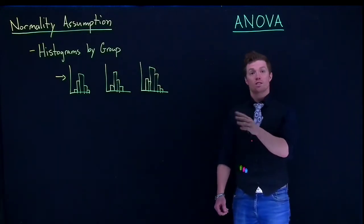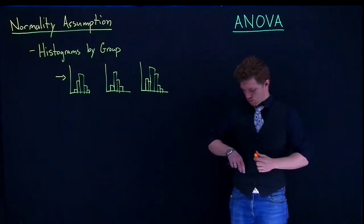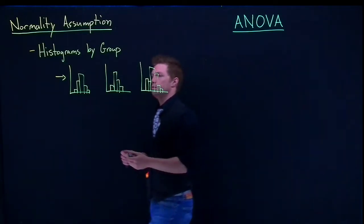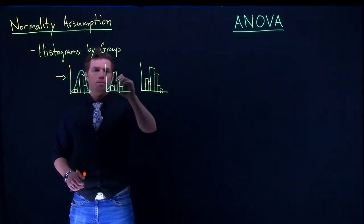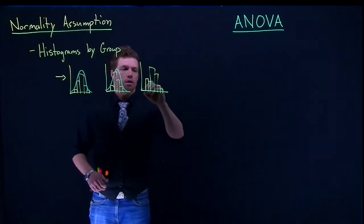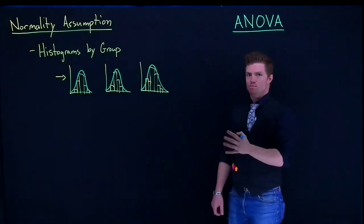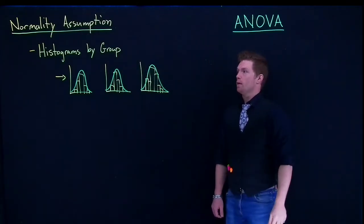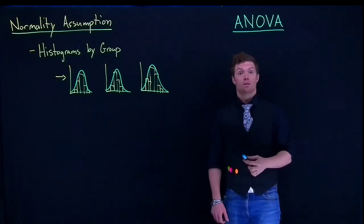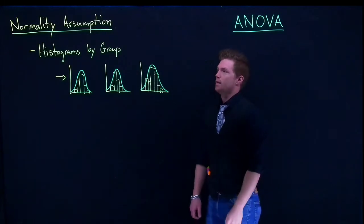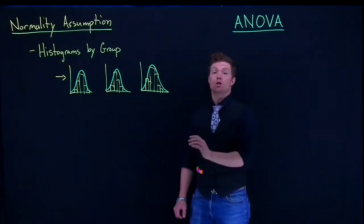Now each of those looks slightly different but on each of them they basically form a rough bell shape. And remember the requirement isn't that they perfectly follow this normal distribution. It's that they are roughly following a normal distribution. So that's one way that we can try to determine and assess if we have a normal distribution for all of our groups is to look at the histograms.